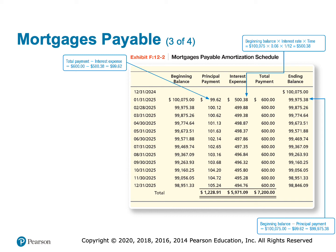Looking at the amortization table for the mortgage: out of the first $600 payment, $500.38 goes toward interest and only $99.62 goes toward principal. When making monthly payments, you pay interest first and what's left goes toward principal. The interest is calculated as $100,075 × 6% × 1/12 = $500.38. So $600 minus $500.38 leaves only $99.62 reducing the principal.